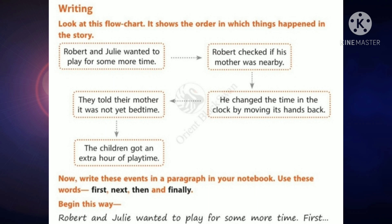See the first box: Robert and Jodie wanted to play for some more time. Next, Robert checked if his mother was nearby. The next arrow mark below: he changed the time in the clock by moving its hands back. Next: they told their mother it was not yet bedtime. And the last one: the children got an extra hour of playtime. This is the order in which things happened in the story.